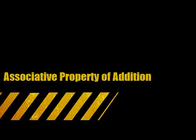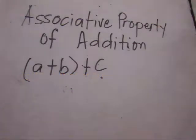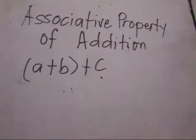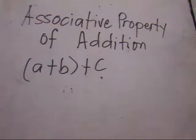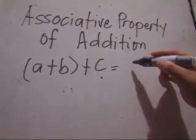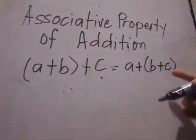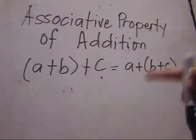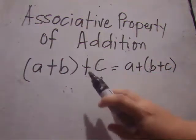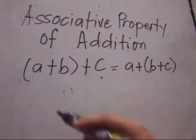Another property of real numbers is the associative property of addition. It means that when adding three numbers represented by A, B, and C, the sum will be the same whether we find the sum of the first two numbers and then add the third, or find the sum of the last two numbers B and C and then add it to the first number.